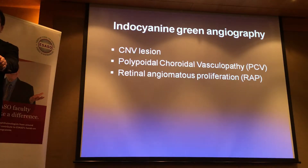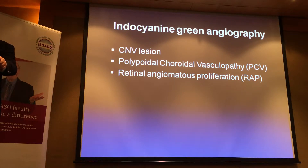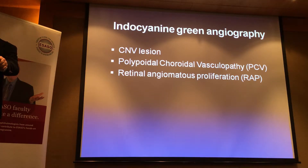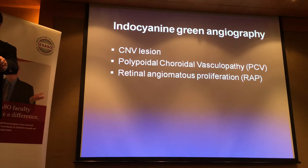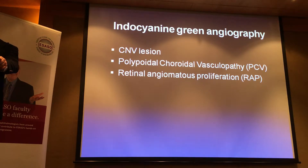ICG angiograms — as you know, ICG has less leakage from the choroidal capillaries, and hence it stays inside the vessels, making it better for imaging choroidal vessels. This is certainly useful for CNV lesions. You can see the branching vascular network, and you can see polyps — the gold standard for PCV. Even things like RAP will be more clearly seen.